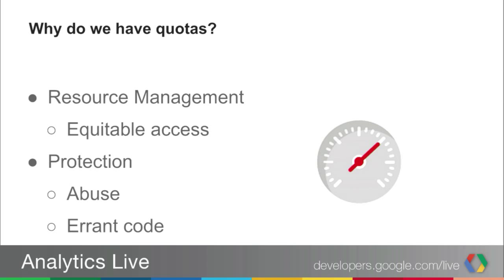The other purpose is protecting our systems from abuse — it may be intentional or unintentional. There could be some buggy program that may go into an infinite loop and just overload our servers, which could affect other developers who are actually doing the right thing. So we need to have this protection in place. At the end of the day, it's for both developers as well as us that we have these quotas in place.